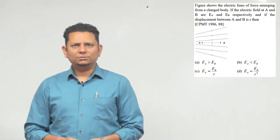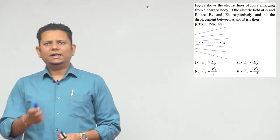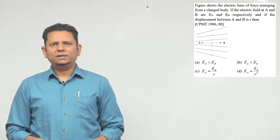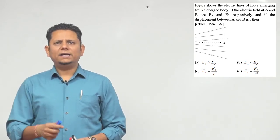The next question says: the figure shows the electric lines of force emerging from a charged body. If the electric field at A and B are given as EA and EB respectively, and the displacement between A and B is r...